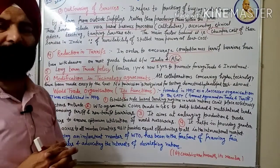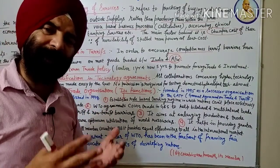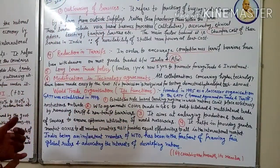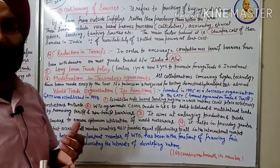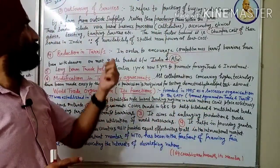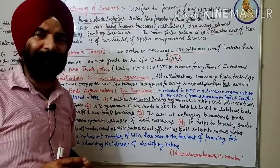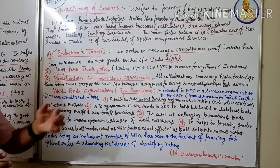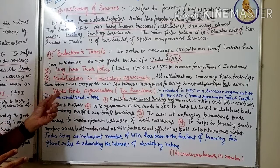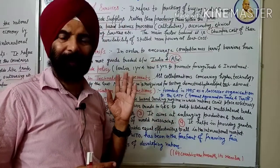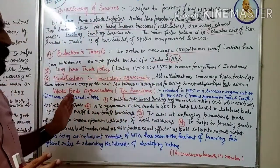So now we have read the meaning of globalization and what reforms happened under globalization. First, liberal inflow of FDI. Second is partial convertibility. Third is outsourcing of services. Fourth is reduction in tariff. Fifth is long-term trade policy. And the last one is modification in technology agreements.